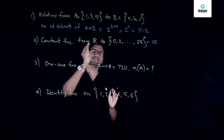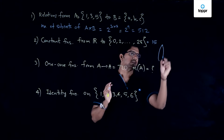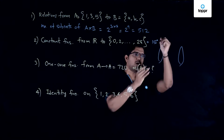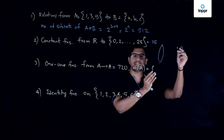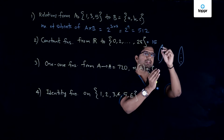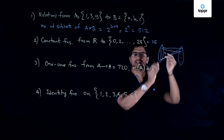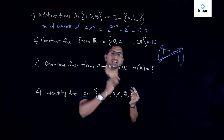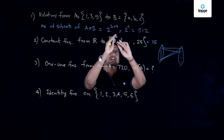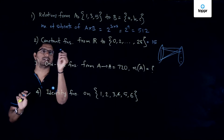We are asked to find the number of constant functions from the set of real numbers to this 15-element set. In a constant function, all elements in the domain are mapped to one element. All elements can be mapped to the first element, the second, and so on up to the 15th. So there are 15 different constant functions. The cardinality of the domain doesn't matter here — the answer is 15.